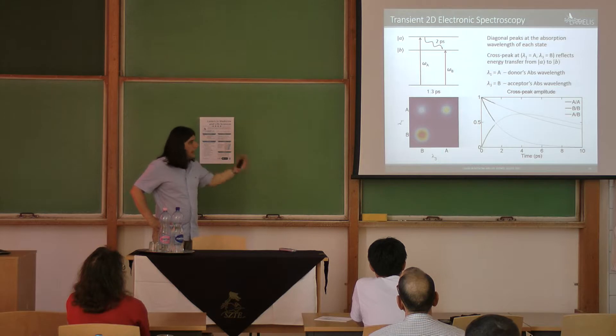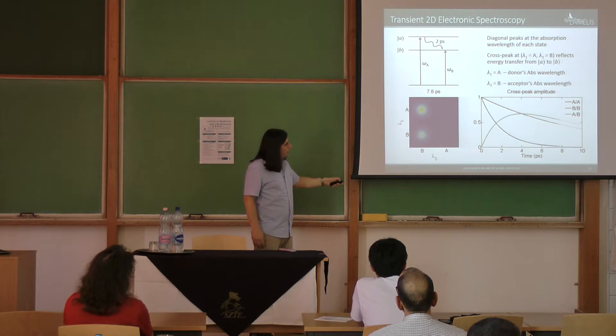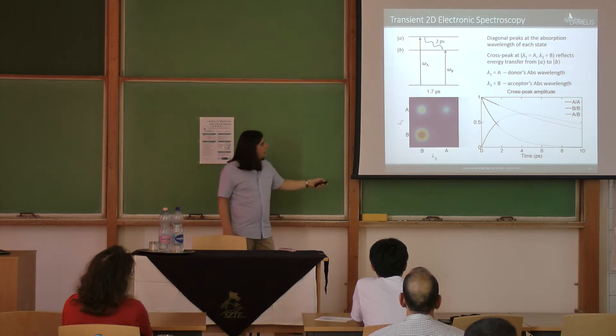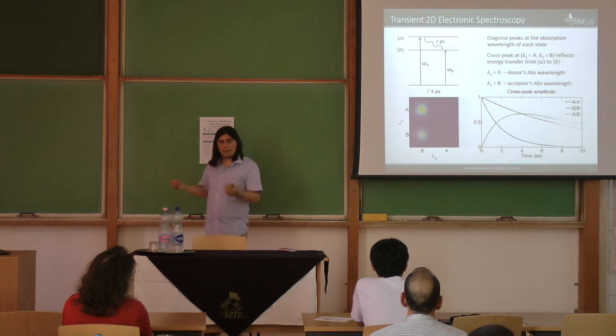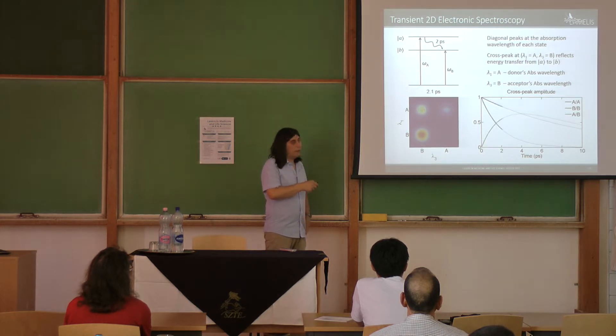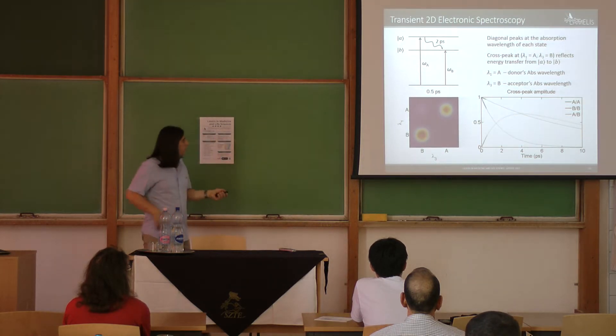We measure in time, and as energy transfer proceeds, we can follow the generation of this cross peak. Basically, the transient population of that state will increase in time. Maybe then it will follow to another path and then it will decrease again. So basically, we are measuring the kinetics of the system. Just by following the intensity of the cross peak in time, we get the rate equation. That's the goal at the end. The goal is to get the rate equation of the system, the kinetic equation.